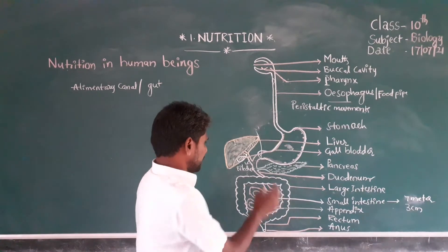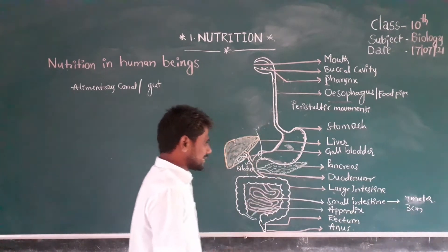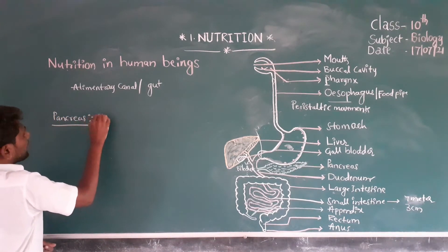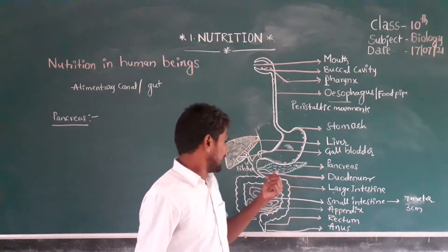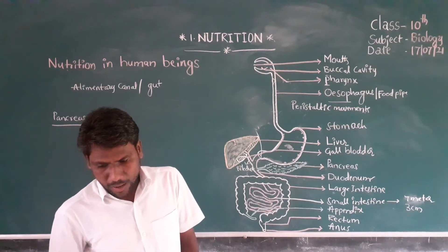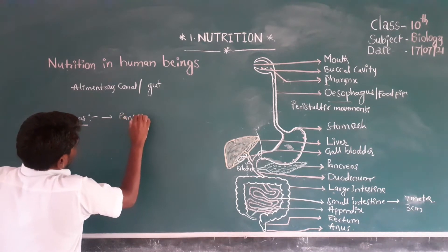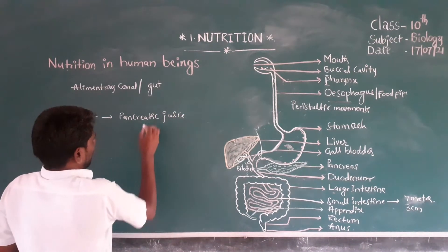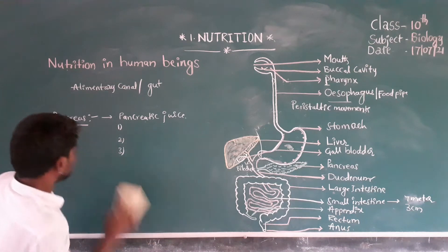In the previous video, we already discussed about the role of the liver. Now we have to discuss about the pancreas. The pancreas is present on the left side of the duodenum and it is a leaf-like structure. The pancreas releases pancreatic juice, which contains three types of enzymes.